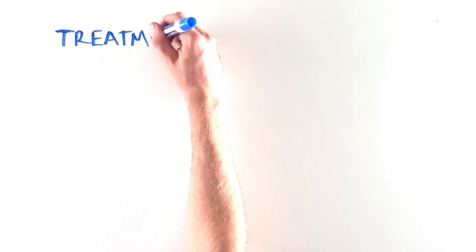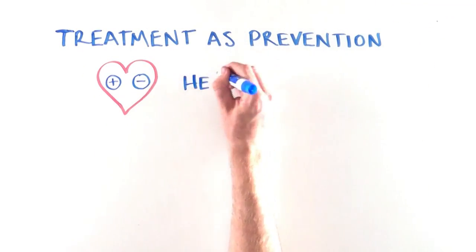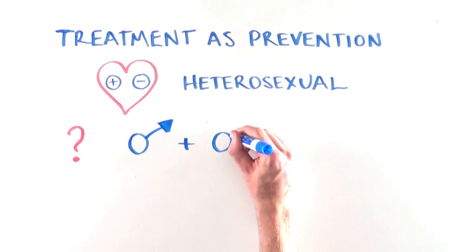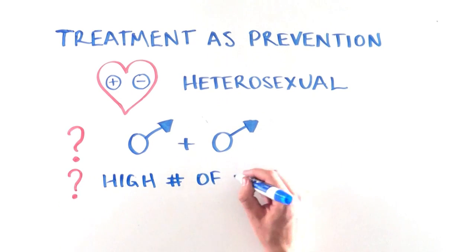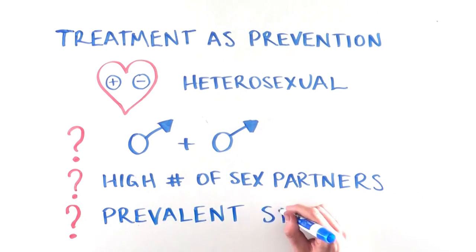Finally, most data on treatment as prevention come from studies with heterosexual couples. We still need answers about how well undetectable viral load predicts HIV transmission risk in other contexts, for example, among gay and bisexual men, among people with a greater number of sex partners, and in settings where sexually transmitted infections are more prevalent.